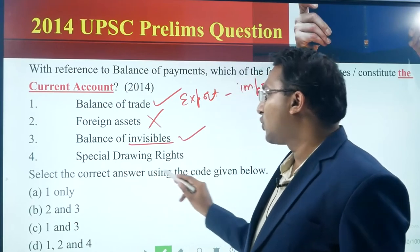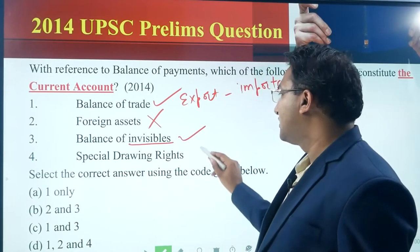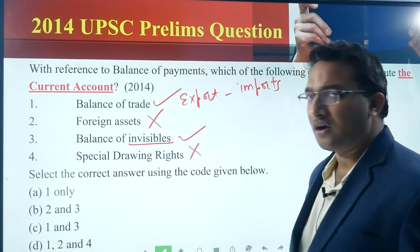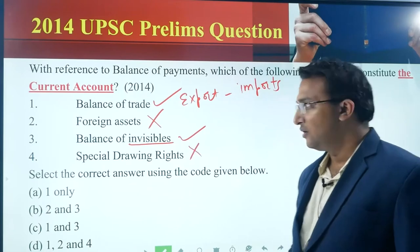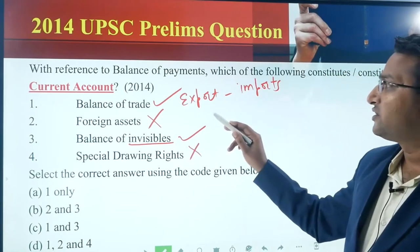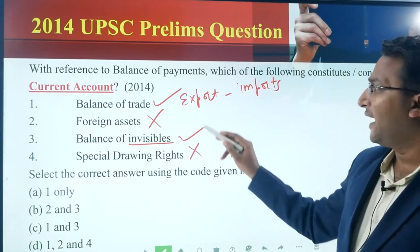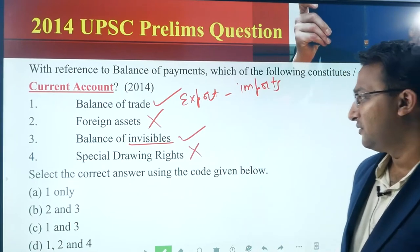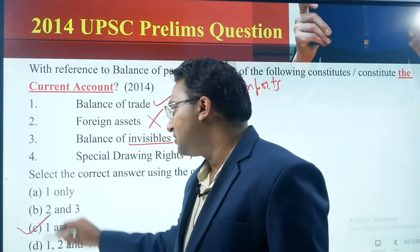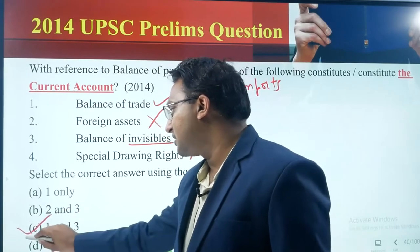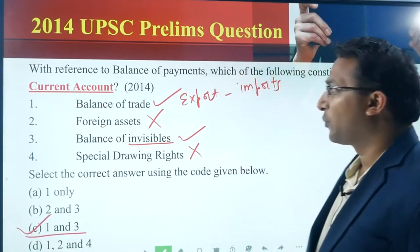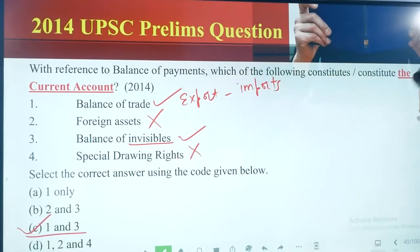Special drawing rights — this is not part of the current account; this is part of the reserves. So statements one and three, that means option C, is correct. The answer is option C.